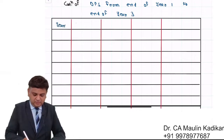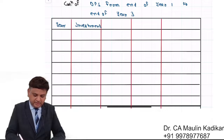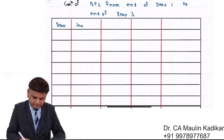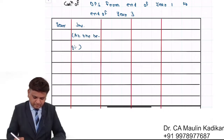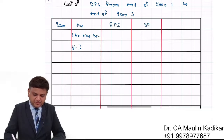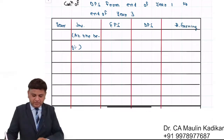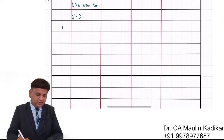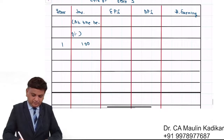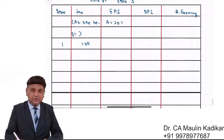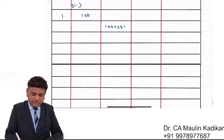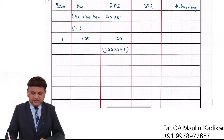Column number 1 is year. Column number 2 is investment, at the beginning of the year. At the first year beginning, investment is made of Rs.100. The rate of earning of the company is 20%, so 100 × 20%. First year end earning portion is 20.